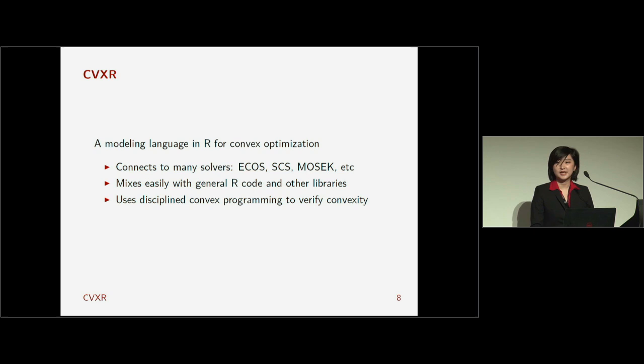So CVXR brings these cool capabilities to R. It connects to many new solvers. So we have ECOS and SCS, two open-source solvers. And we also have MOSEK and Gurobi, which I think many of you will be happy about, since they're professional-grade solvers a lot of statisticians use in the community.